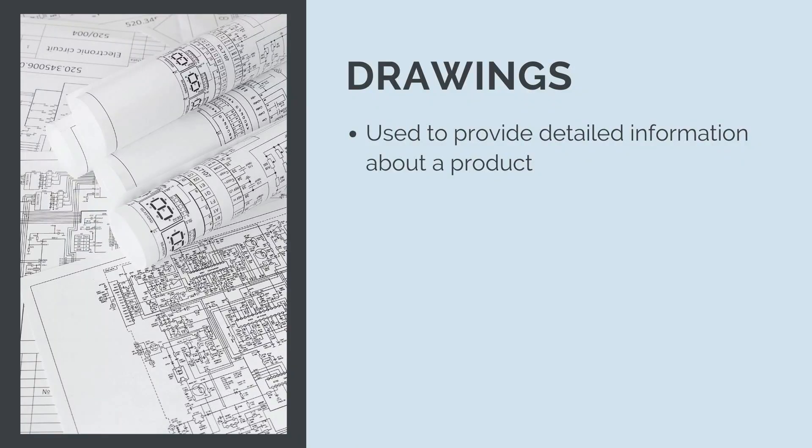Drawings are used to provide detailed information about what we have to build. If you've ever heard the saying a picture tells a thousand words, that definitely applies on a construction project. There is no way to describe a bridge or a road without a drawing — it would be pages and pages of information and so open to interpretation. So architectural and engineering drawings are used to explain exactly what needs to be built.